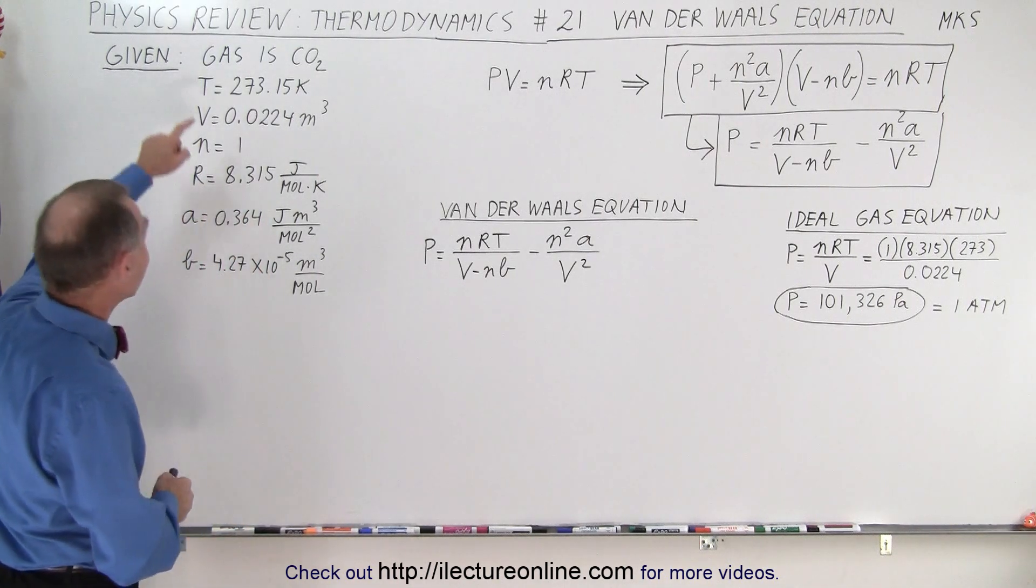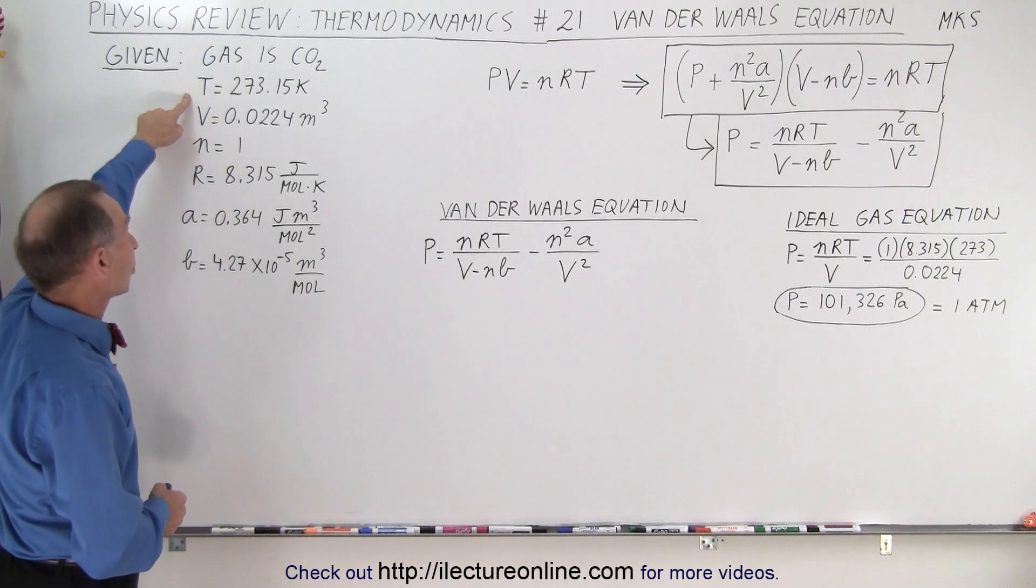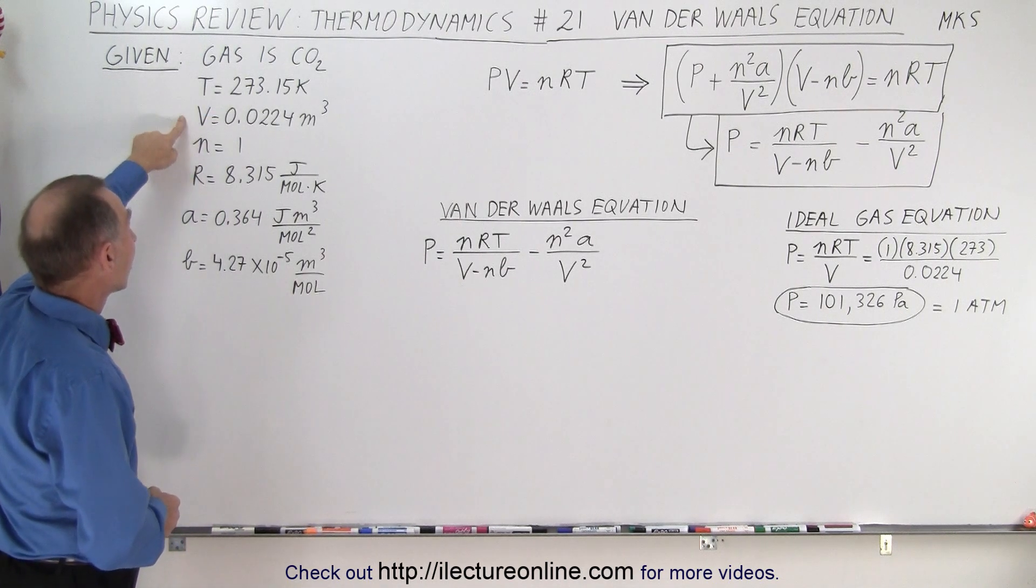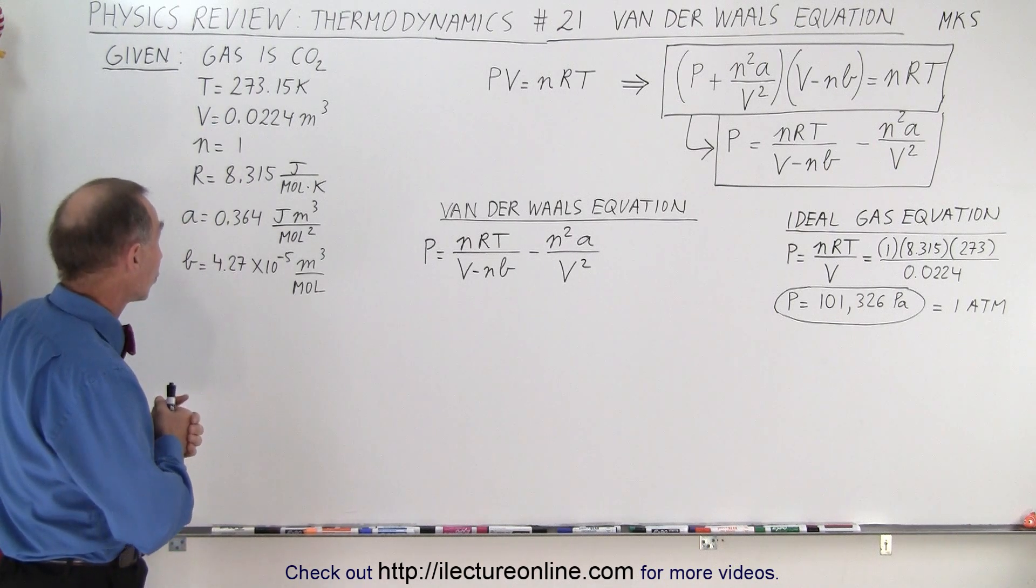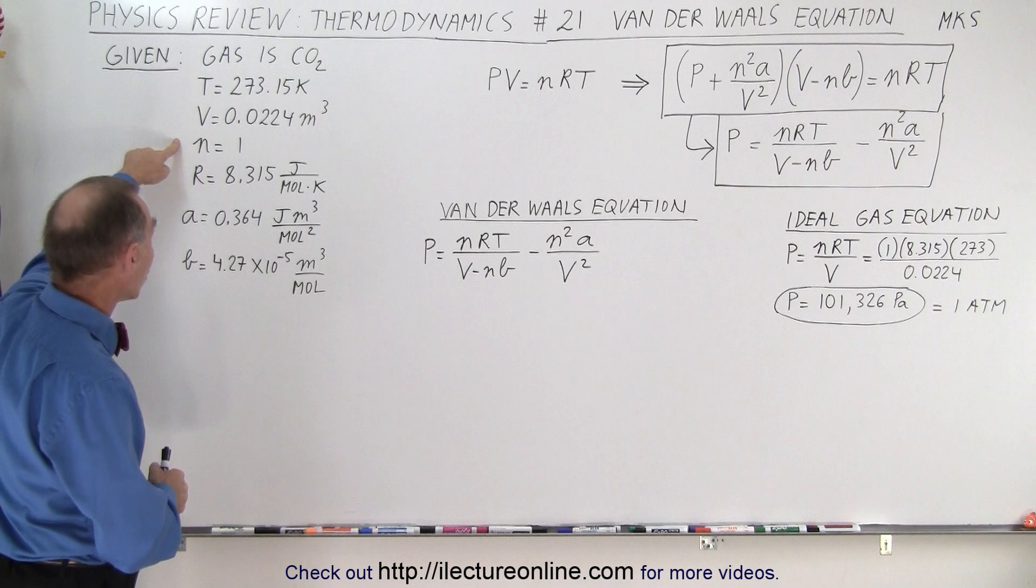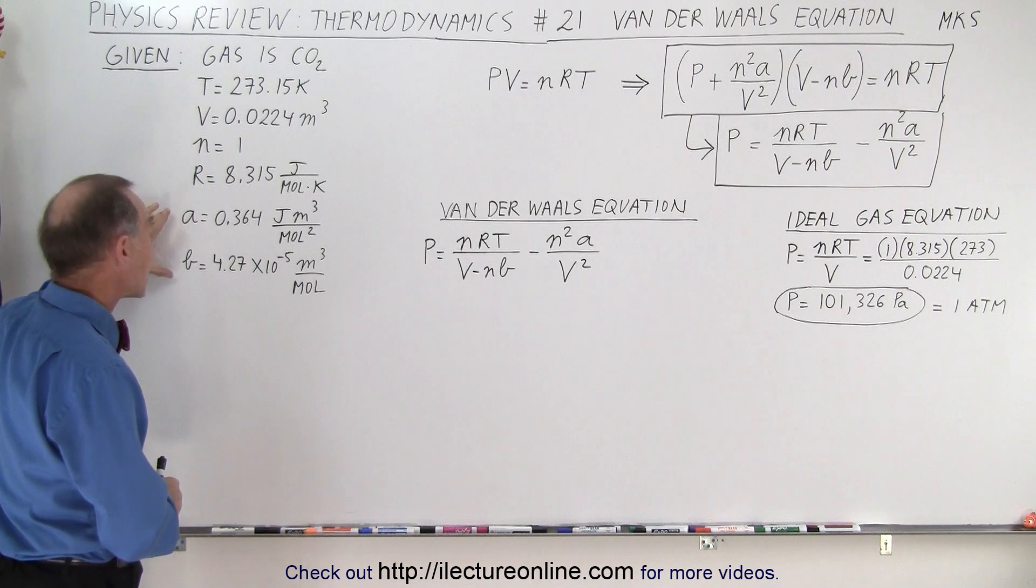So let's say we have a gas, carbon dioxide, at zero degrees Celsius with a volume of 22.4 liters, which is 0.0224 cubic meters, one mole. Here's our gas constant.